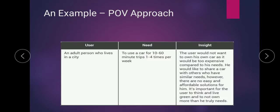Here is an example of the POV approach: a person living in a city needs to use a car for 10 to 60 minutes, one to four times per week. His insight is that he would not want to own a car because it's expensive and maintenance is an additional cost. He would like to share a car with someone who has a similar need, and there are no affordable solutions for him currently. It's important for the user to live green and not own more than he truly needs.